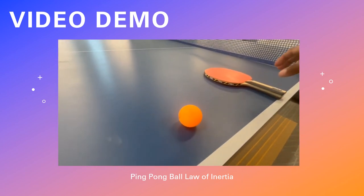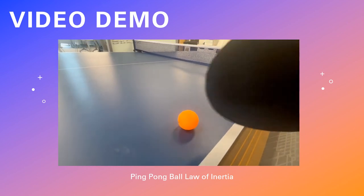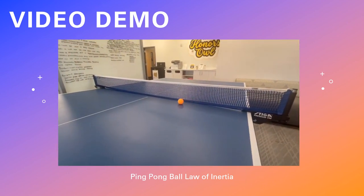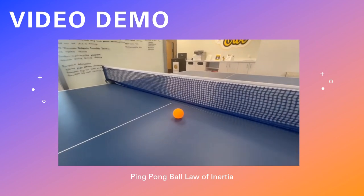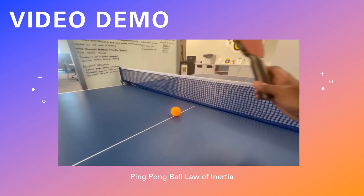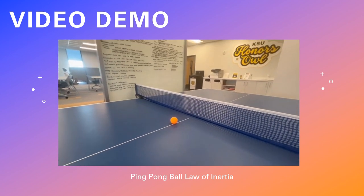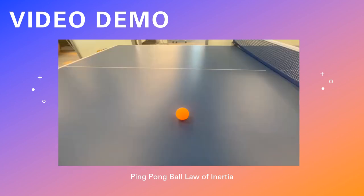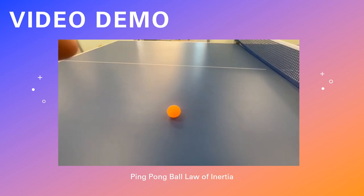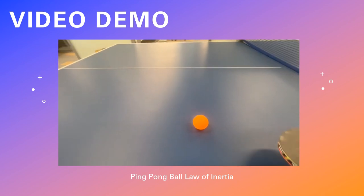I stopped it and rolled it back, then stopped it with my finger — no movement whatsoever. I also hit it toward the net to show an inelastic collision, where when it hit the net it slowed down. That shows the transfer of energy — the kinetic energy transferred into velocity through the ball was lost when it hit the net. That was my illustration of inertia in real life using sports.